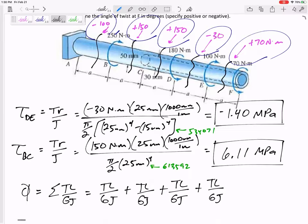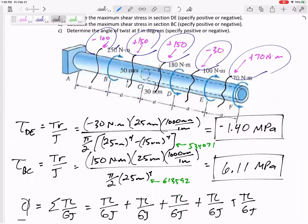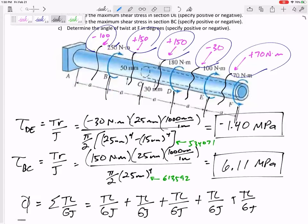How many sections do we have? I broke it up into five sections. So I'd have the TL over GJ of section AB, section BC, section CD, DE, and EF.